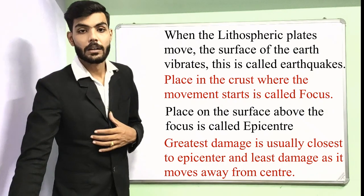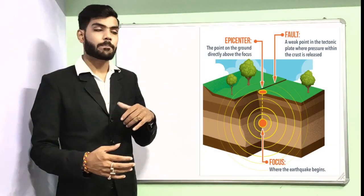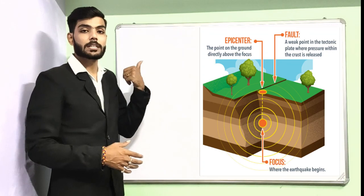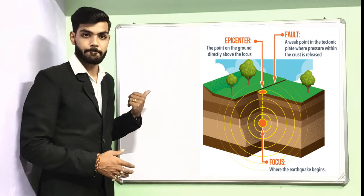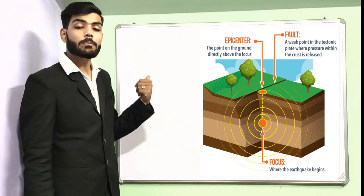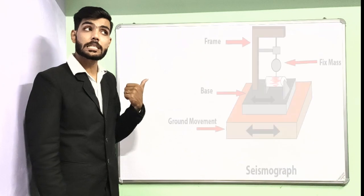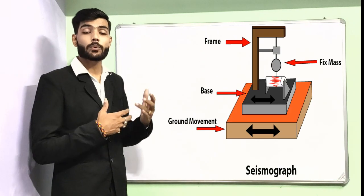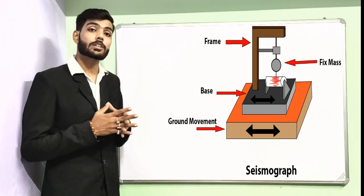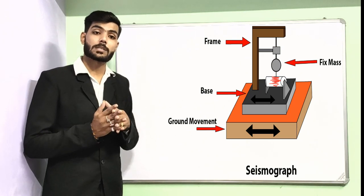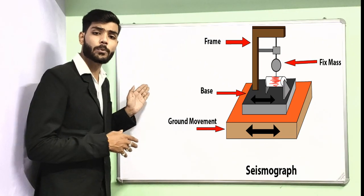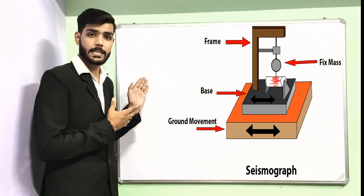You can see in the diagram the epicenter, the fault, and the focus. Earthquakes are measured through the seismograph — the intensity of an earthquake is measured through the seismograph, which has a frame, a base, a ground movement indicator, and a fixed mass.